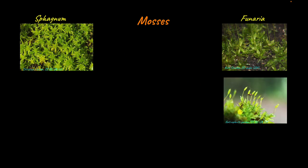Mosses are another type of bryophyte. Examples of mosses include Sphagnum and Funaria. Unlike liverworts, which are mainly flat, mosses have a thin, upright and more leafy thallus. Asexual reproduction is through fragmentation or budding. The haploid gametophytes of moss form on top of leafy structures.